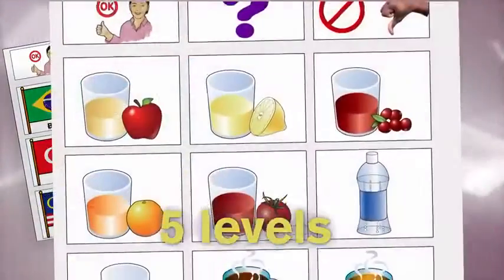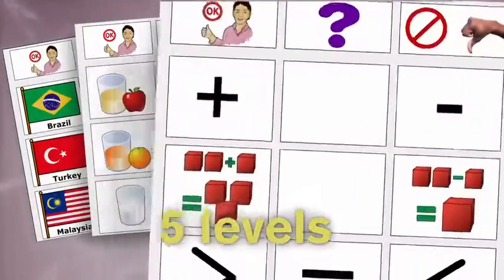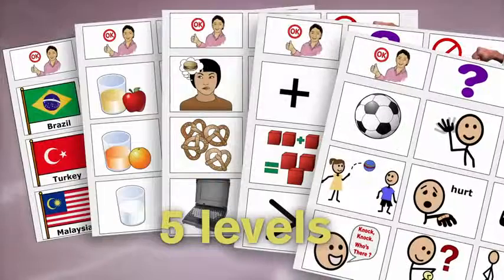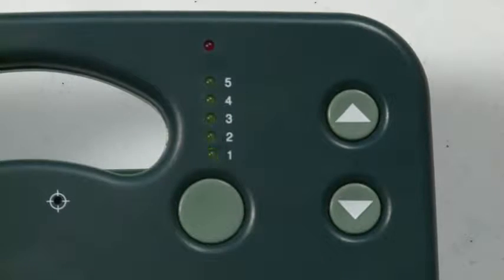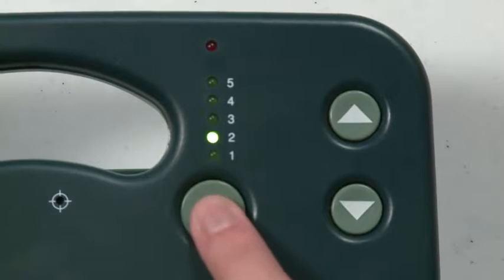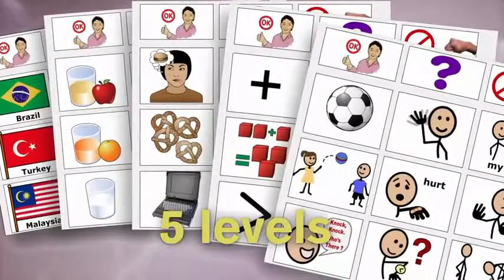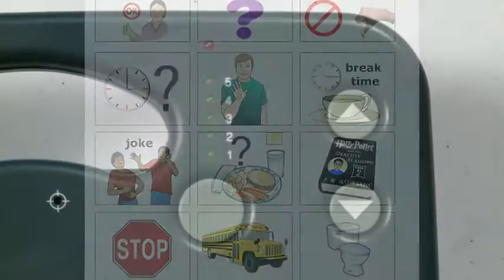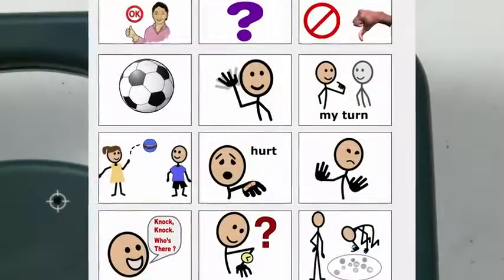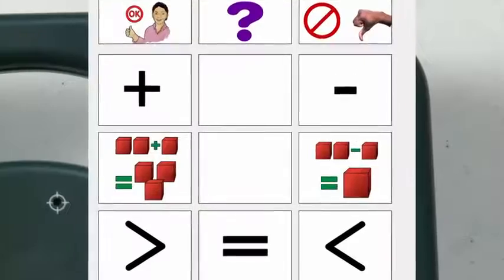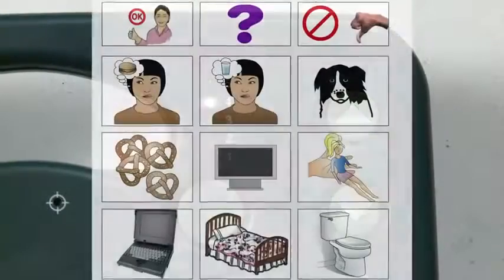Want more messages? How about five times more? Each GoTalk has five levels. Each level can hold a complete set of messages — one message for each button. For example, this is level one. Now press the level button. The GoTalk is now on level two, where you can record a whole new set of messages. Every GoTalk has five levels, for five times the messages. Some people use levels for different times of the day: level one for daily needs, level two for chatting with your friends at recess, level three for participating in math class, level four to communicate at home, and level five for any other communication needs.